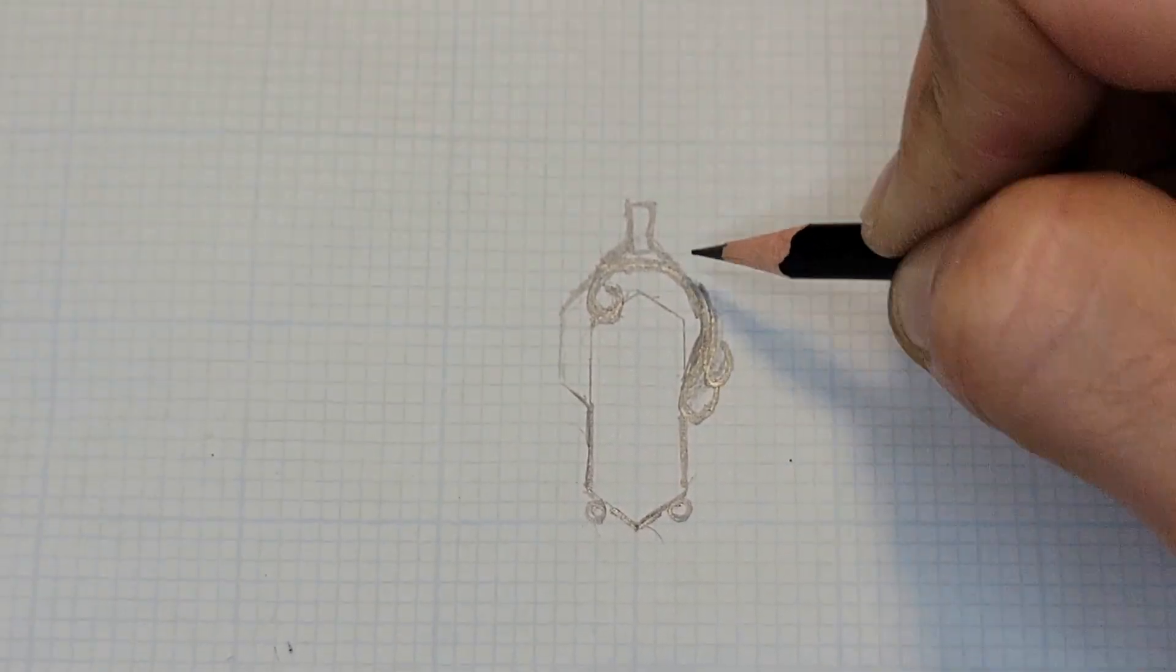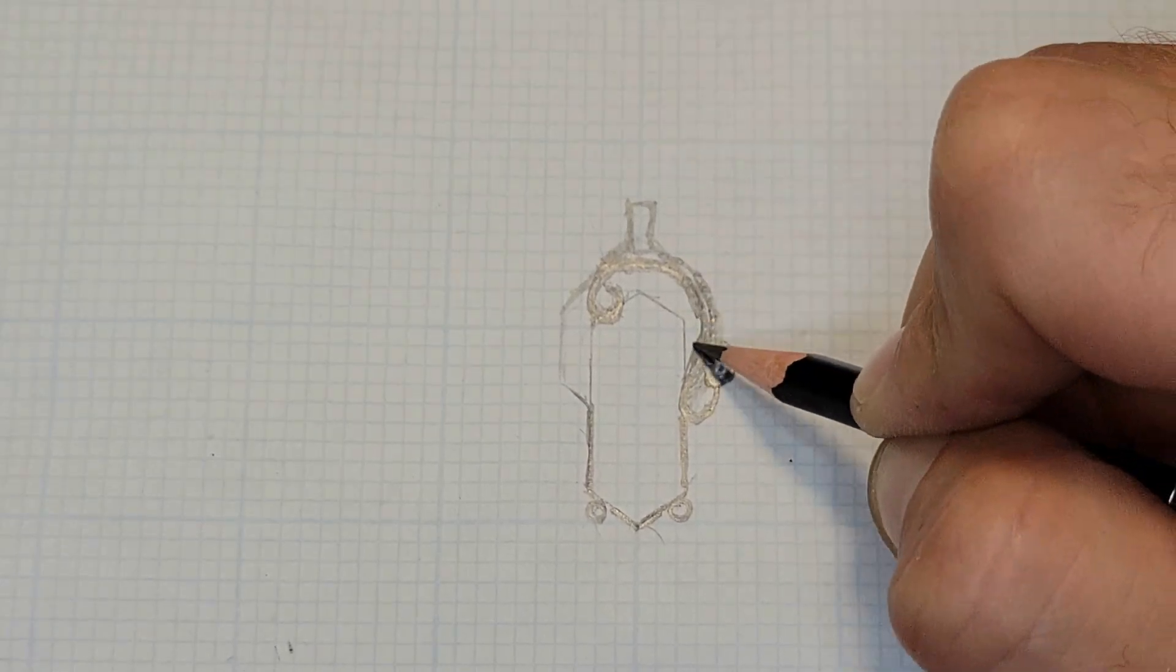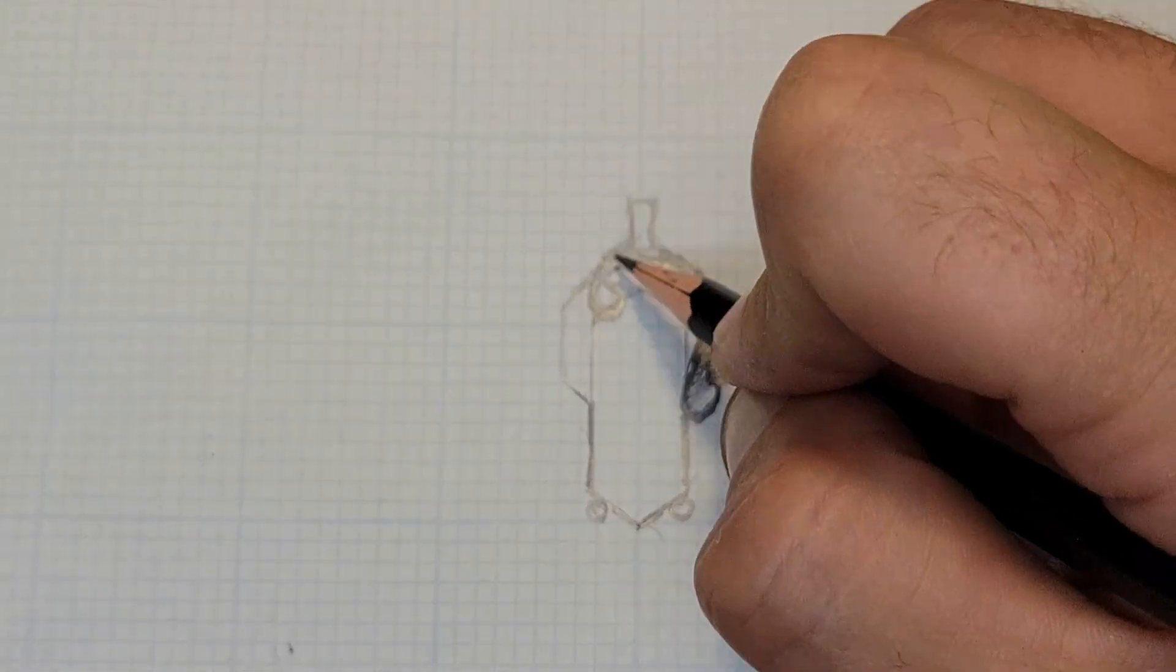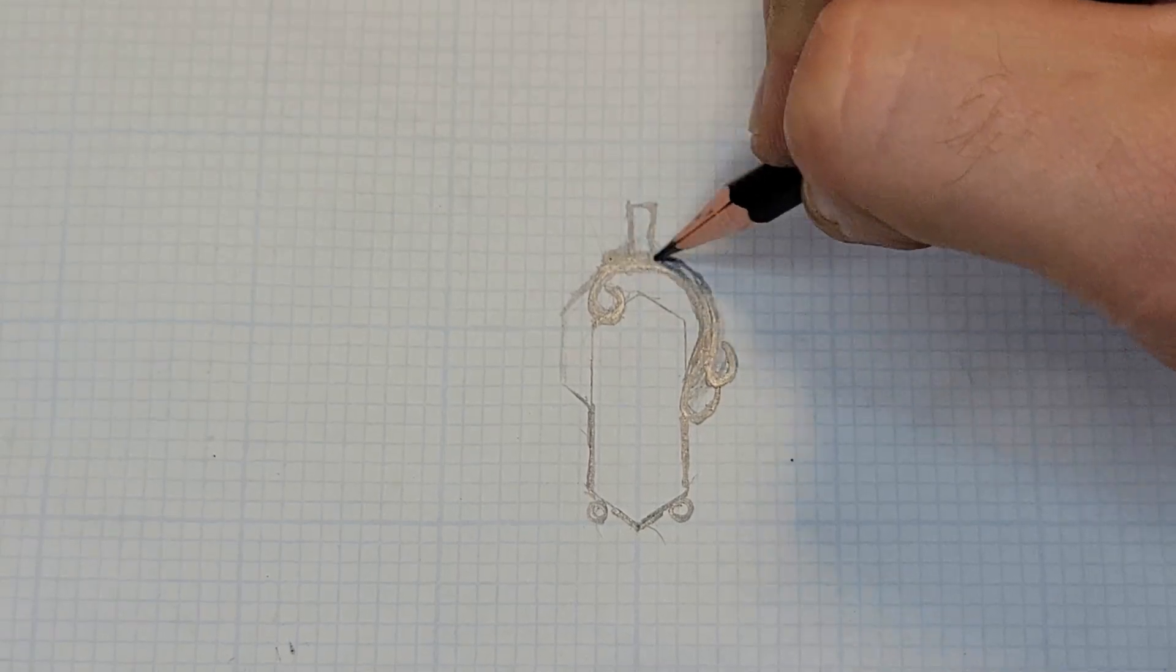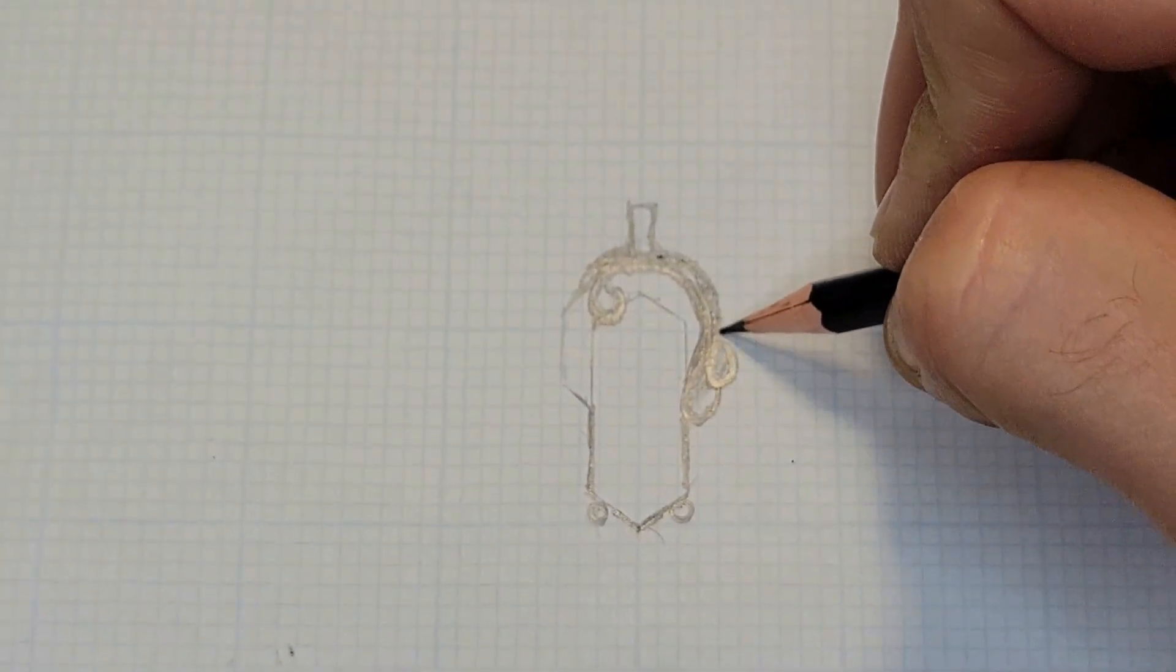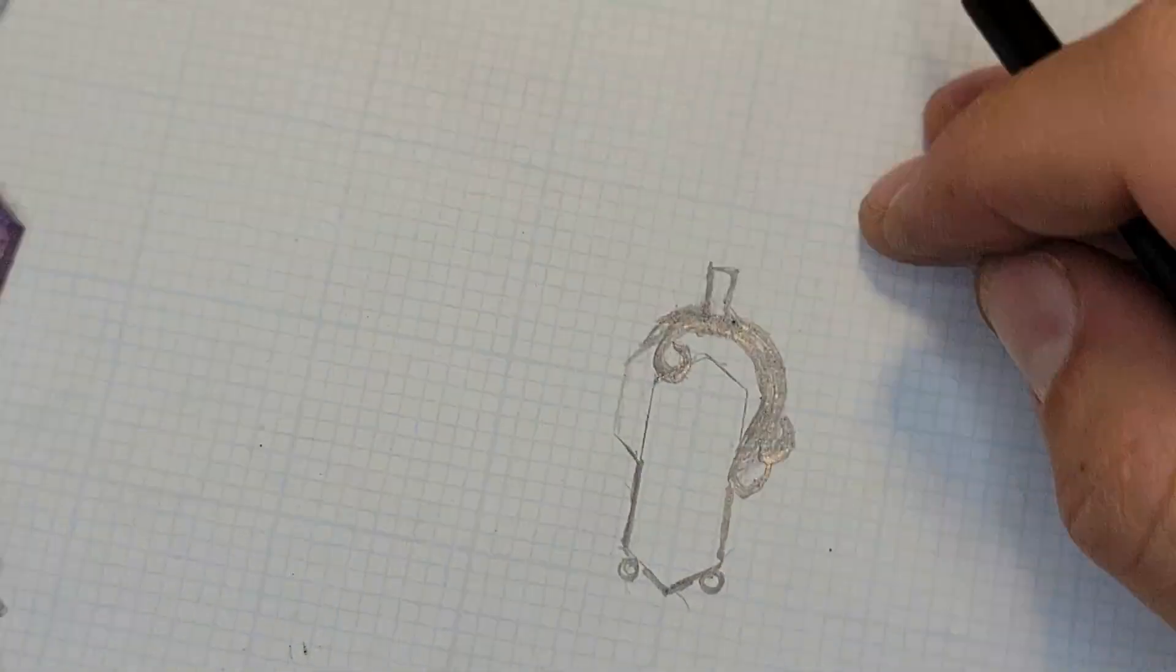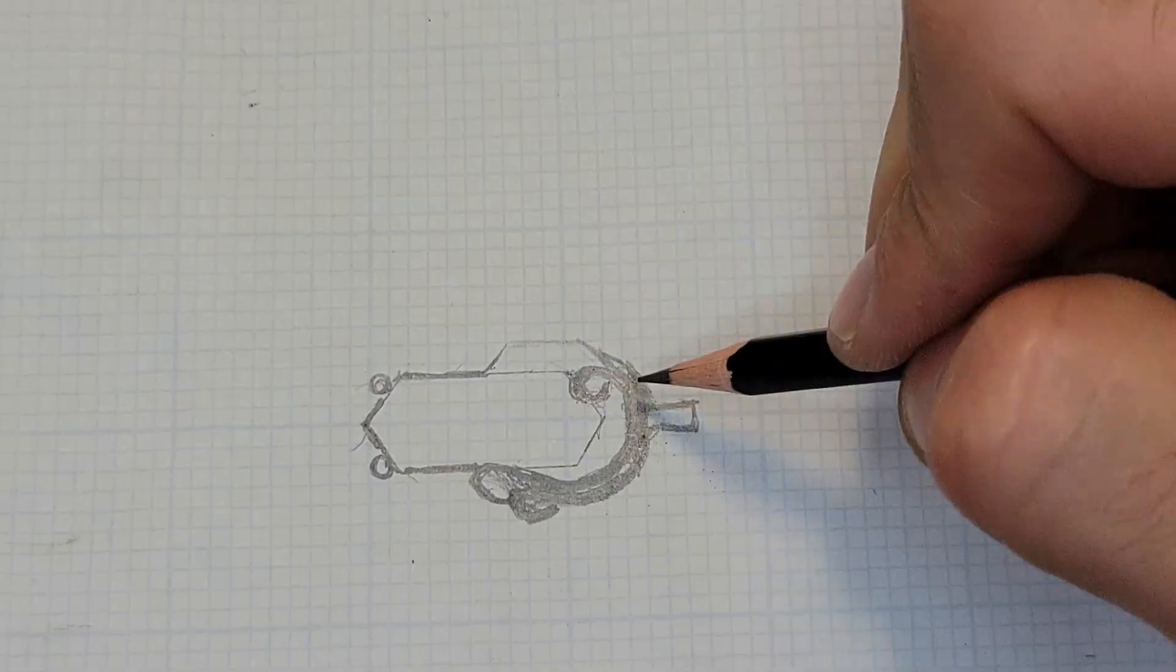I'm going to add some details on the side. And this will be...the main swirl will be some half-round wire. This opening swirl on the outside will be a utilization of 20-gauge square wire. And I'll be using 30-gauge wire to connect it together.